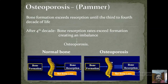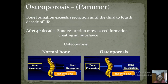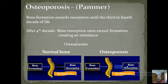Osteoporosis is a term coined by Pommer. Normally, bone formation exceeds resorption until the third to fourth decade of life, maintaining bone mineralization. After the fourth decade, bone resorption rates exceed formation, creating an imbalance in bone metabolism and hence osteoporosis — literally a porotic bone. If the balance is maintained, net bone loss is zero; if bone formation is less than bone resorption, net bone loss leads to osteoporosis.